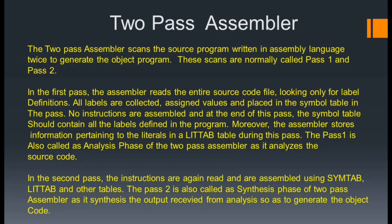The two-pass assembler scans the source program written in assembly language twice to generate the object program. These scans are normally called Pass 1 and Pass 2. In the first pass, the assembler reads the entire source code file looking only for label definitions. All labels are collected, assigned values, and placed in the symbol table. No instructions are assembled.